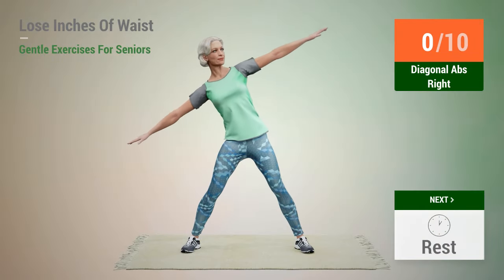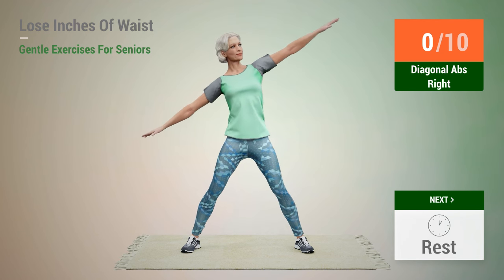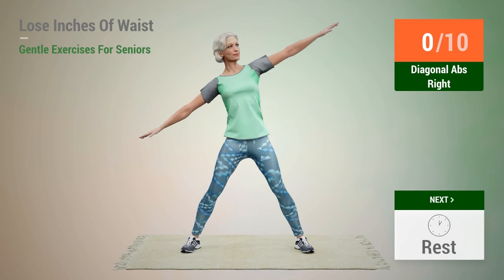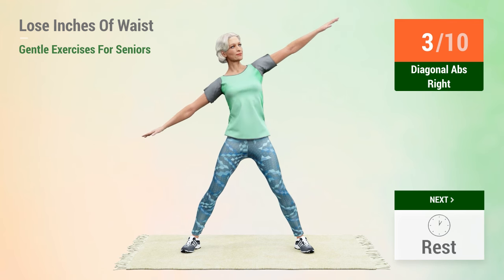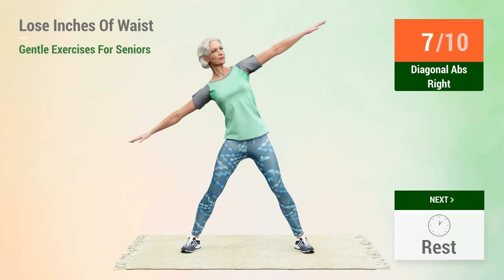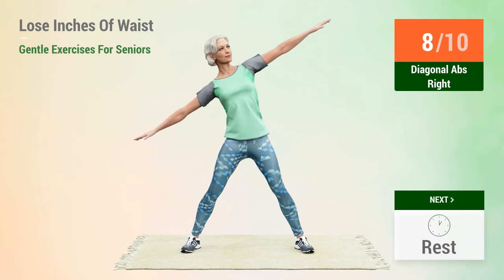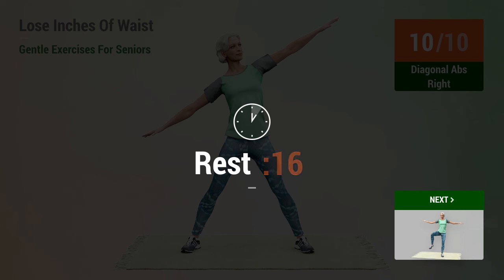Next exercise: diagonal abs. In 5, 4, 3, 2, 1, go. 1, 2, 3, 4, 5, 6, 7, 8, 9, 10. Rest time.